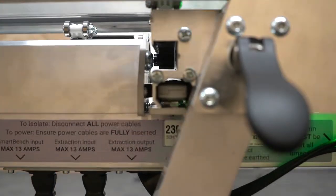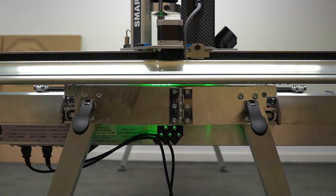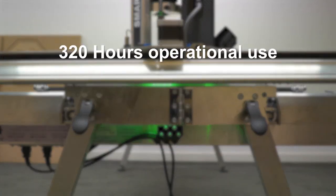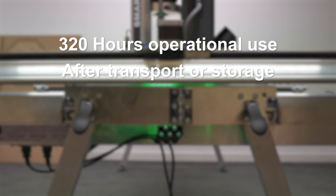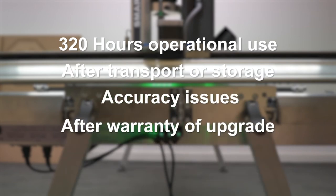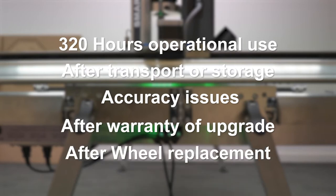In this video we will show you how to set the y-axis wheels on your smart bench. This should be done after 320 hours of operational use, after transport or storage, if you've experienced accuracy issues, if you've replaced your lower beam for warranty or upgrade, or if you've replaced your old wheels.